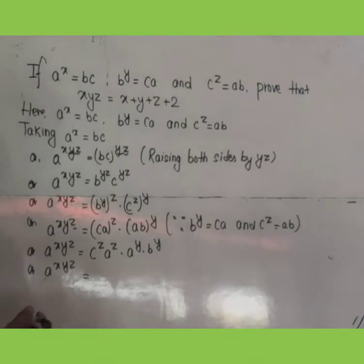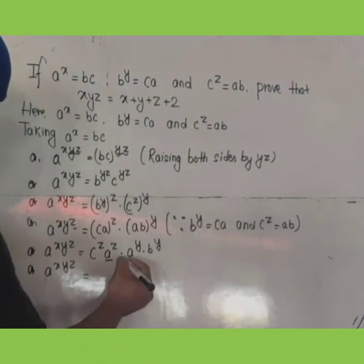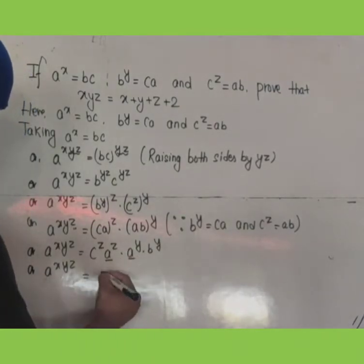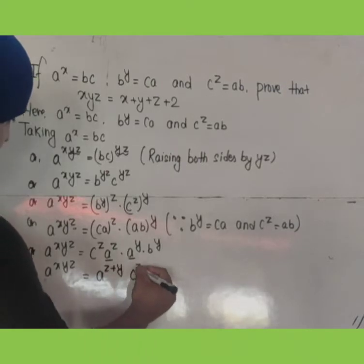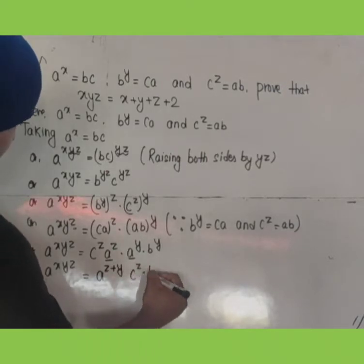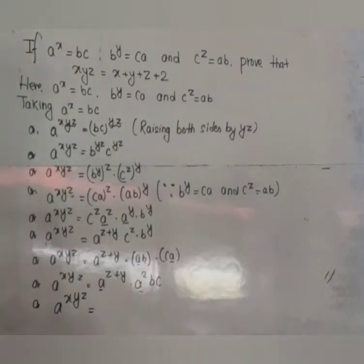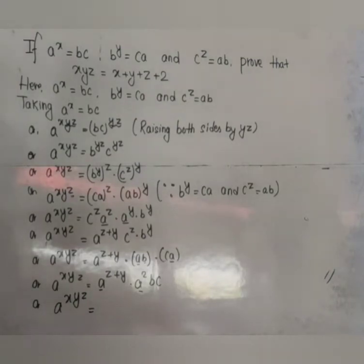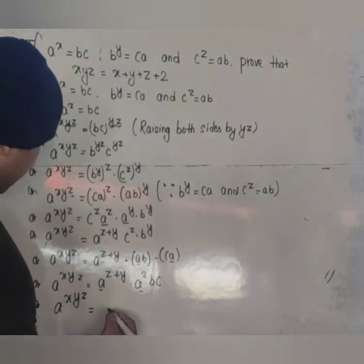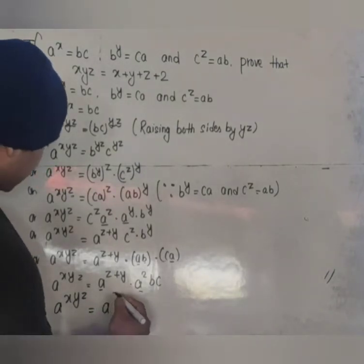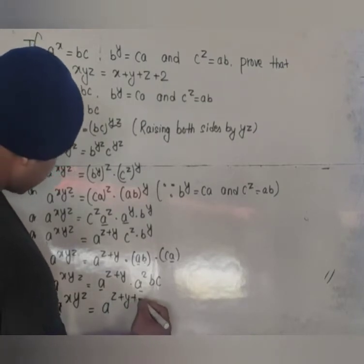Now we can group the same bases. The a terms give a^(z + y). The law of indices says that if the same base terms are being multiplied, their exponents should be added. So we get a^(z + y), and we still have c^z and b^y remaining, giving a factor of +2.